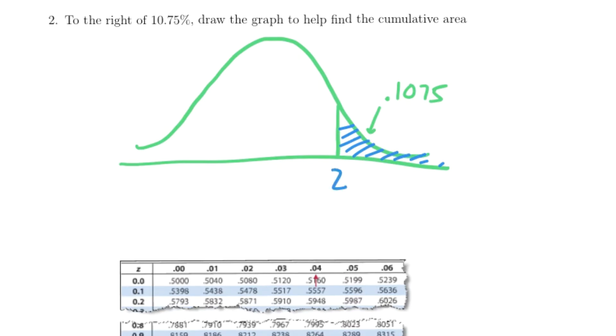Because the normal table gives us cumulative area up to a certain point, up to that z-value, we actually have to figure out what this area equals, because that's the area in the normal table. All we have to do is 1 minus 0.1075, which gives us 0.8925. That's the area we look up in the table.